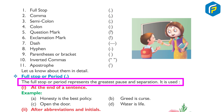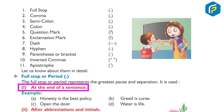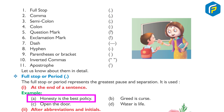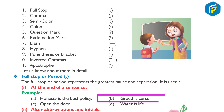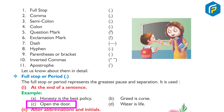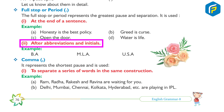Full stop or period: The full stop or period represents the greatest pause and separation. It is used: one, at the end of a sentence. Example: A — Honesty is the best policy. B — Greed is a curse. C — Open the door. D — Water is life. Two, after abbreviations and initials. Example: BA, MLA, USA.